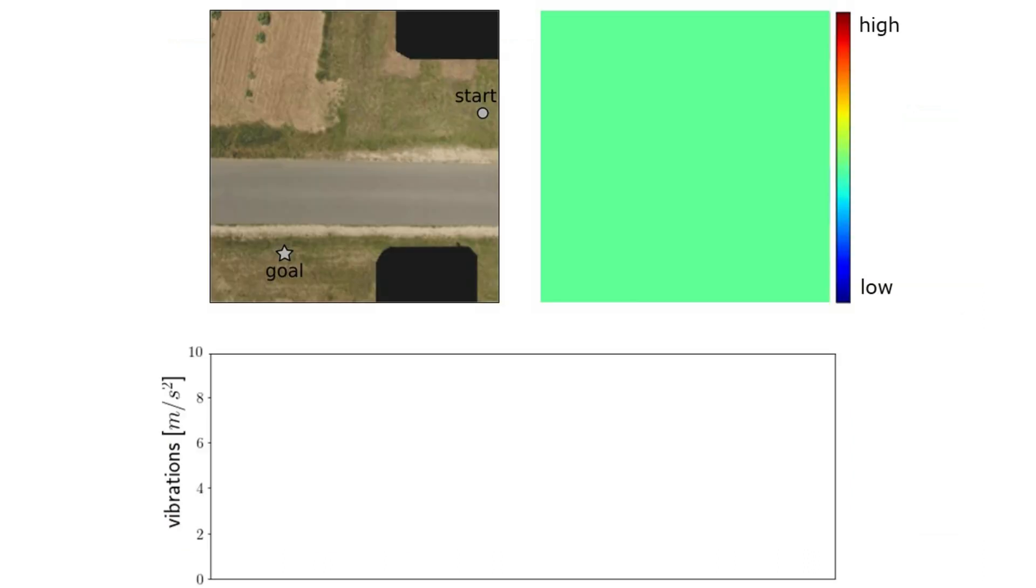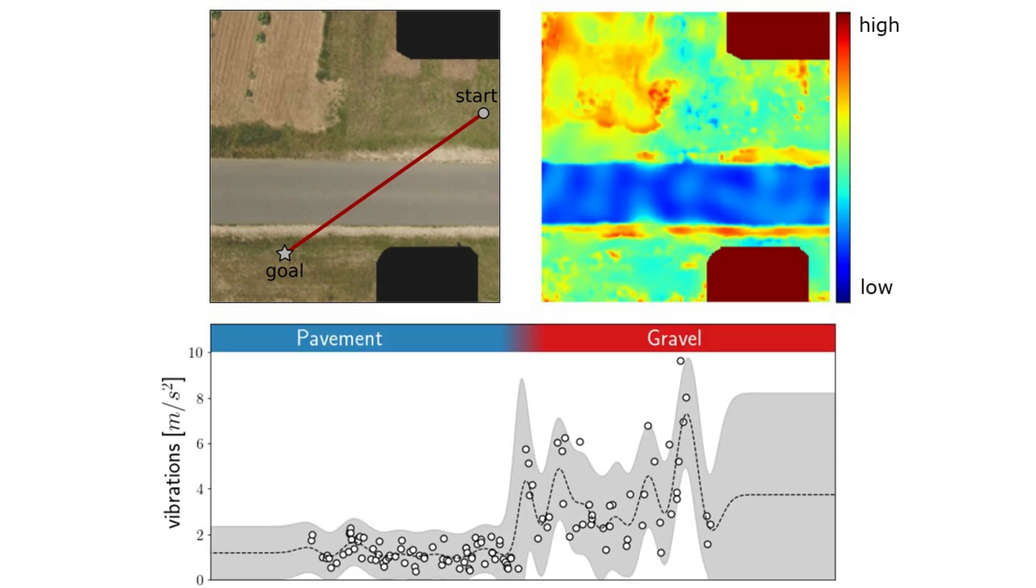We consider the robot observations to learn a place-dependent model of such factors by using a mixture of Gaussian processes and an aerial image of the environment as a prior.